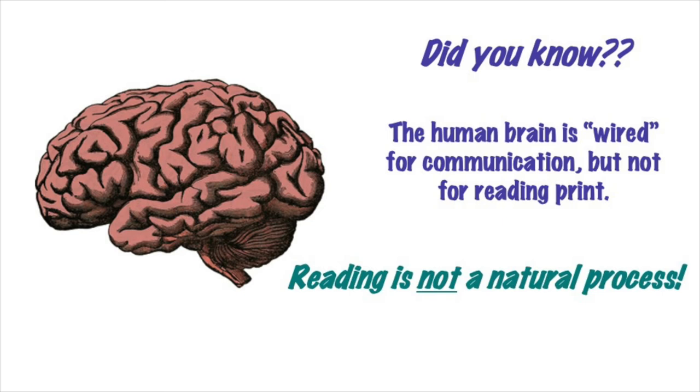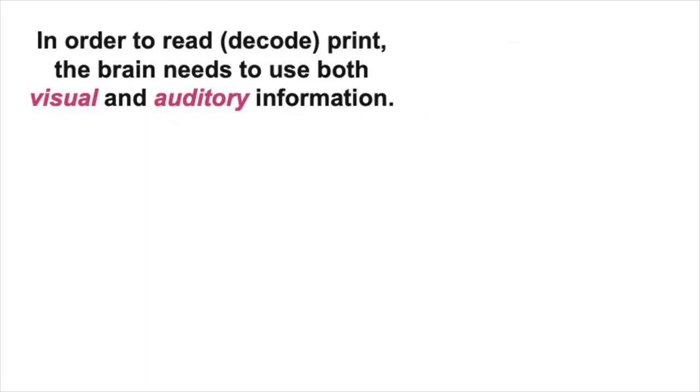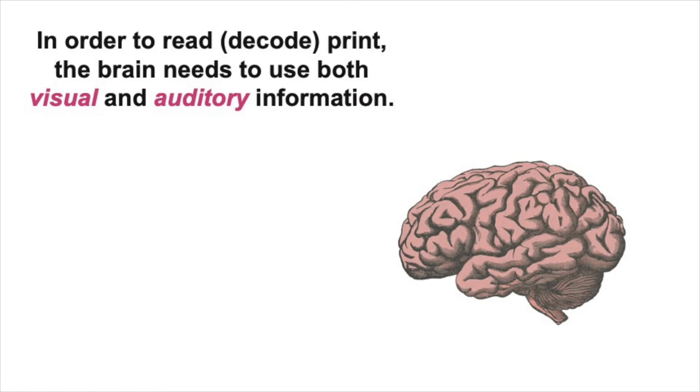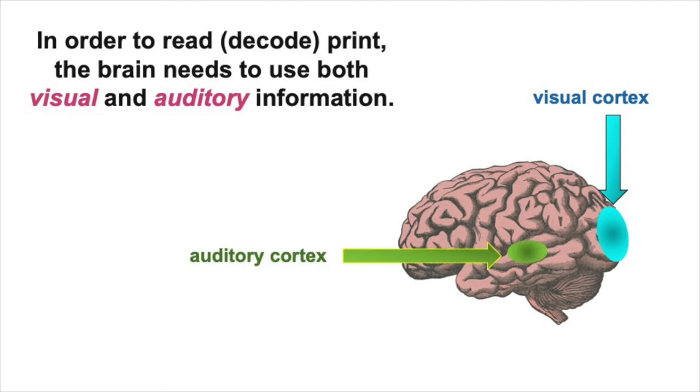Human brains have evolved for being able to communicate with other humans as soon as we're born. That can include oral language, as well as signs and gestures, and even pictographs. But your brain doesn't develop a natural reading ability the way that it develops a natural communication ability. In order to decode or read print, the brain needs both visual and auditory information. This information gets processed in two different parts of the brain, called the visual cortex and the auditory cortex.